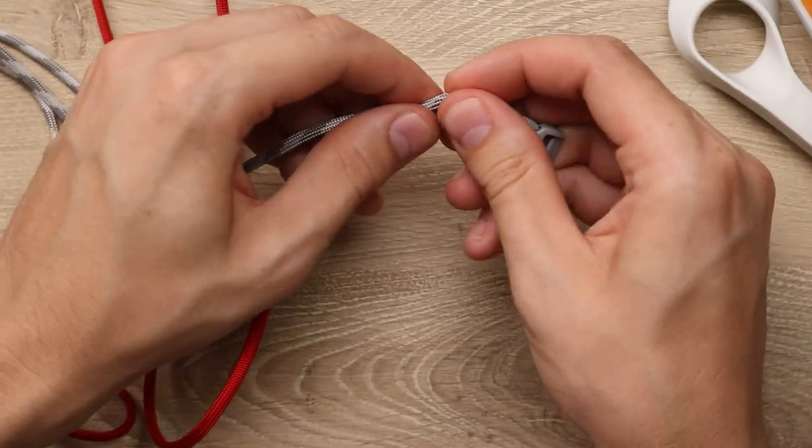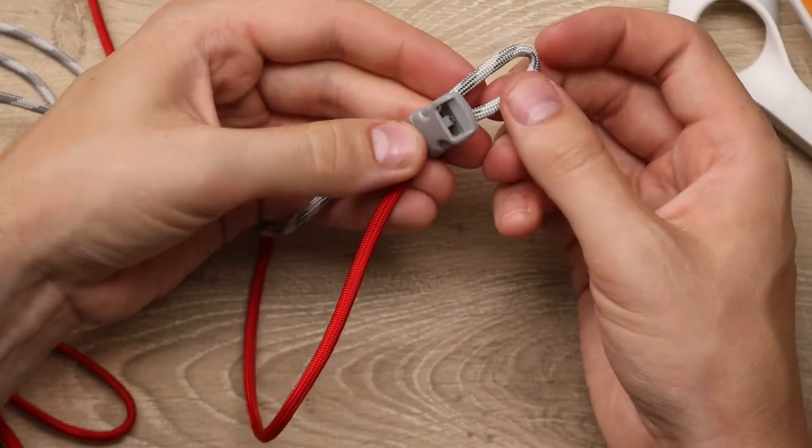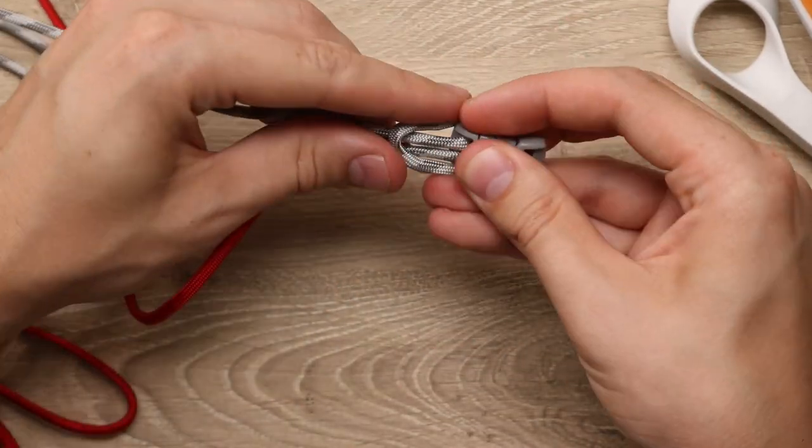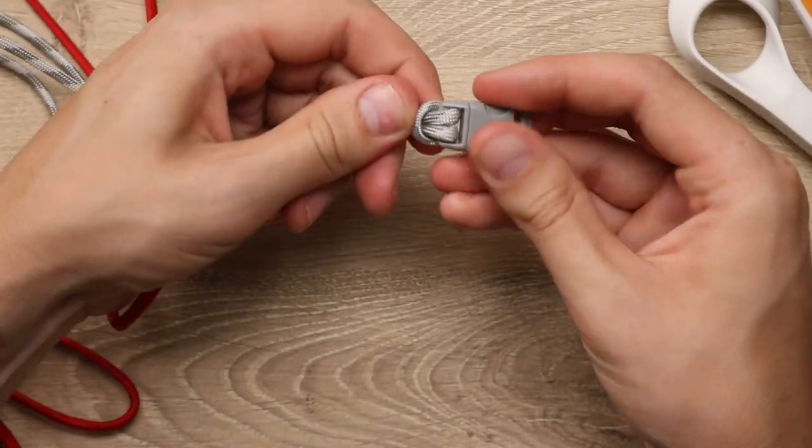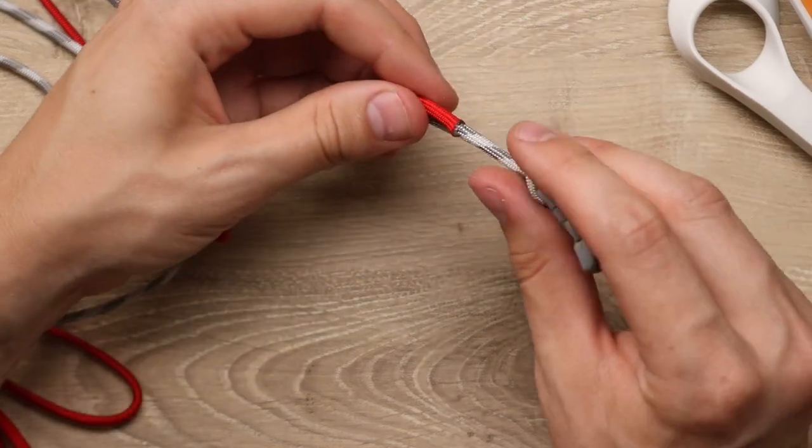And then we're going to put that fold down through the buckle. Once it's through, we'll put the buckle down through that loop. And pull it tight so we have our cow hitch. This melt point is just going to get covered up later on with our weave.